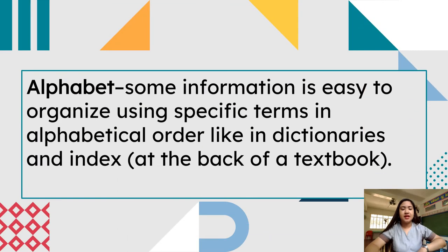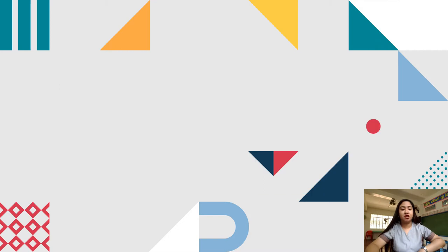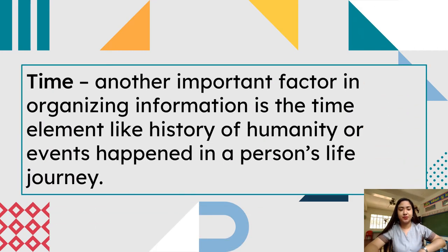Next is alphabet. Some information is easy to organize using specific terms in alphabetical order, like dictionaries and the index of a textbook.